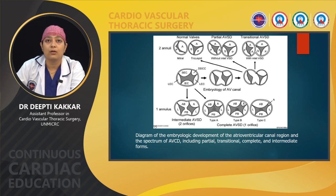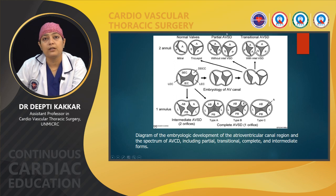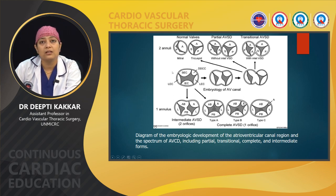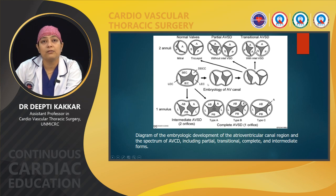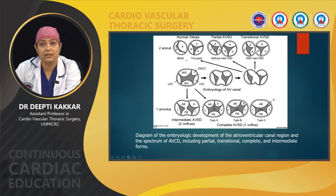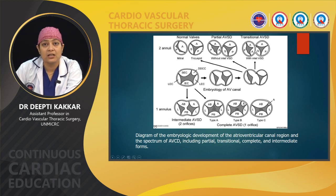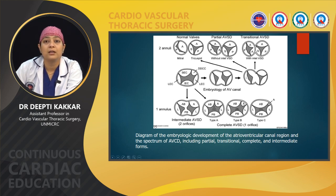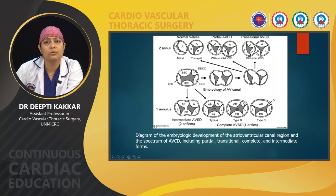In normal AV valve development, the two lateral endocardial cushions and the superior and inferior endocardial cushions grow towards each other, leading to formation of two annuli and separation of the leaflets. The mitral leaflets develop as anterior and posterior, and in the tricuspid as anterior, posterior and septal. When development arrests at an early stage it leads to intermediate AV canal; at a further stage, transitional; and when arrested at the earliest stage, complete AV canal — which is further divided into three types by Rastelli classification.